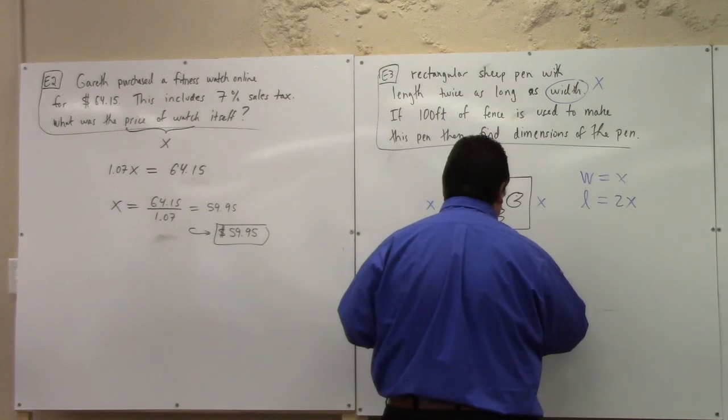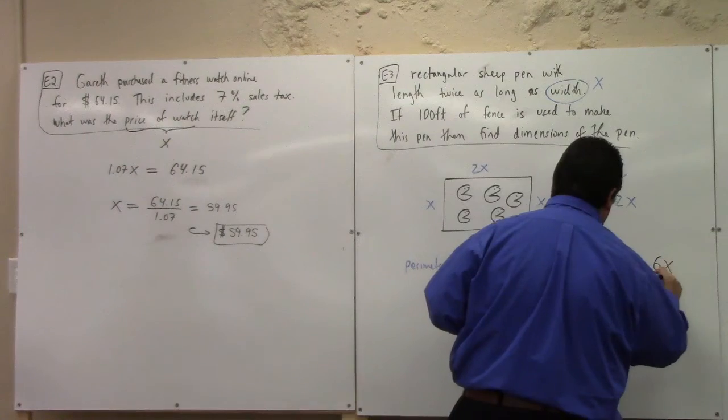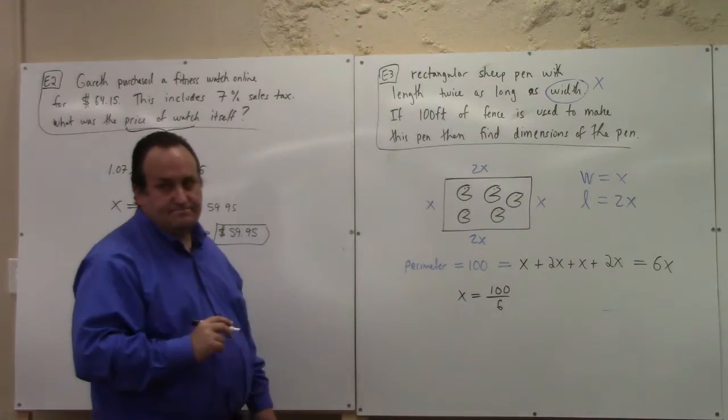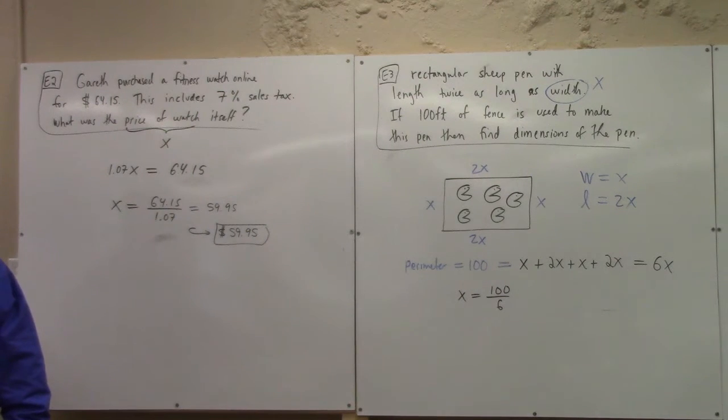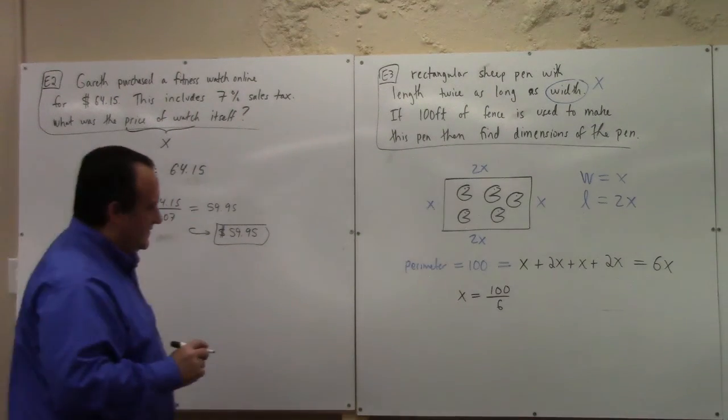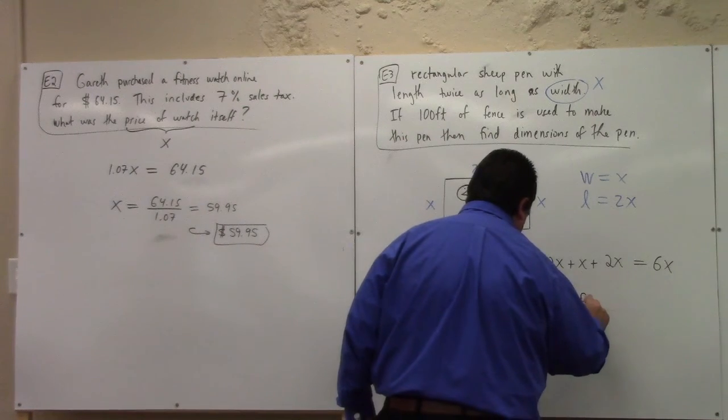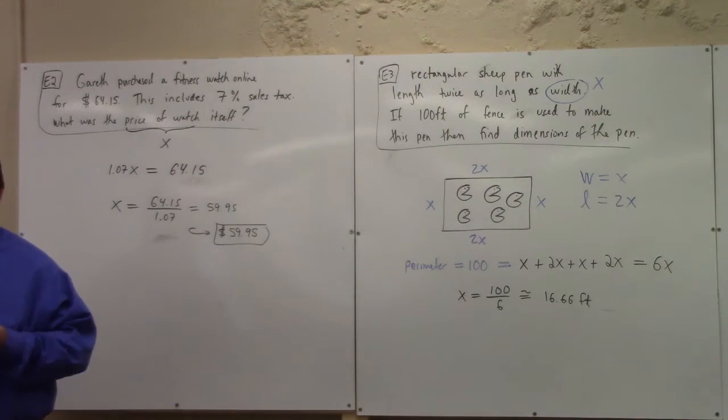I believe so, yeah. So what is x equal to? 100 over 6, right? What's that? I don't know. It's an ugly decimal, right? 16.6666. So this is approximately equal to 16.66 feet, right? So you could say 100 over 6. You could say 50 over 3, if you prefer.